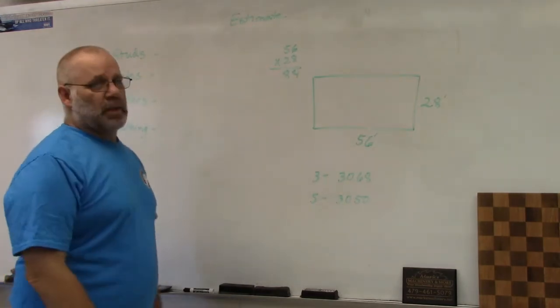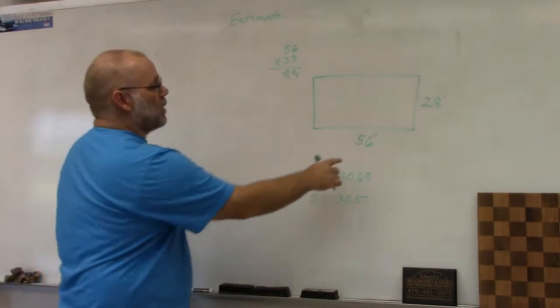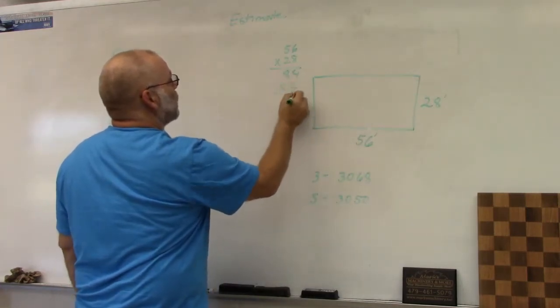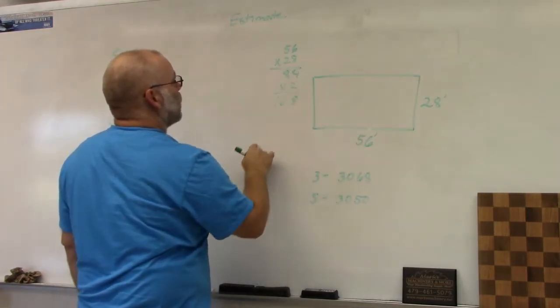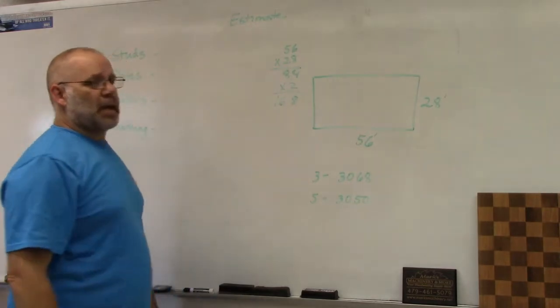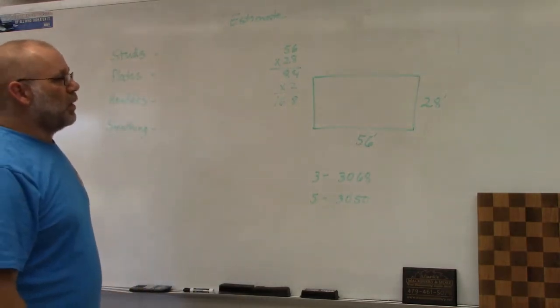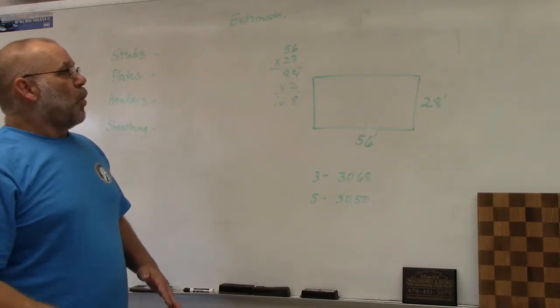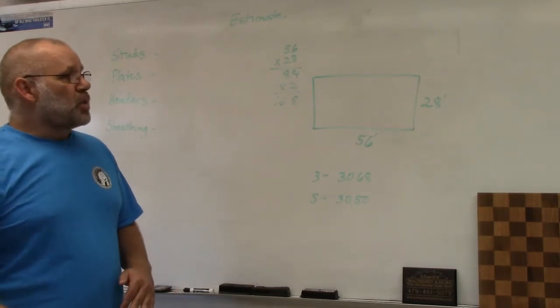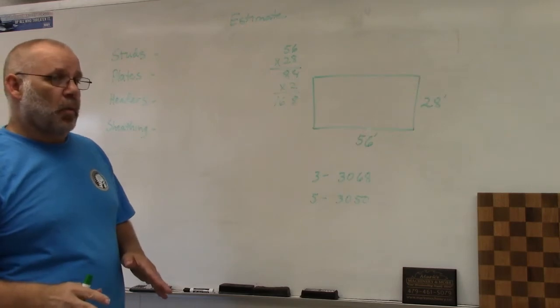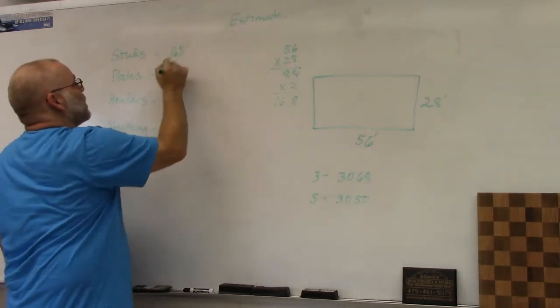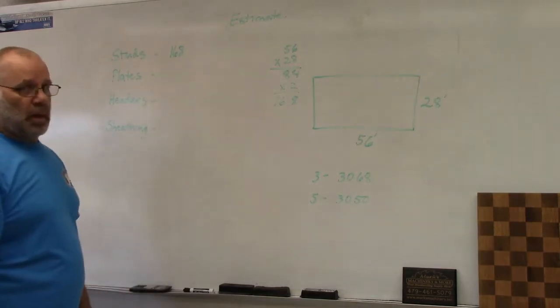That's 84 linear feet for these two walls, and we multiply times two for the other two walls. That gives us a total of 168 linear feet of walls. If we go with one stud for every 12 inches of linear wall, we need 168 studs.